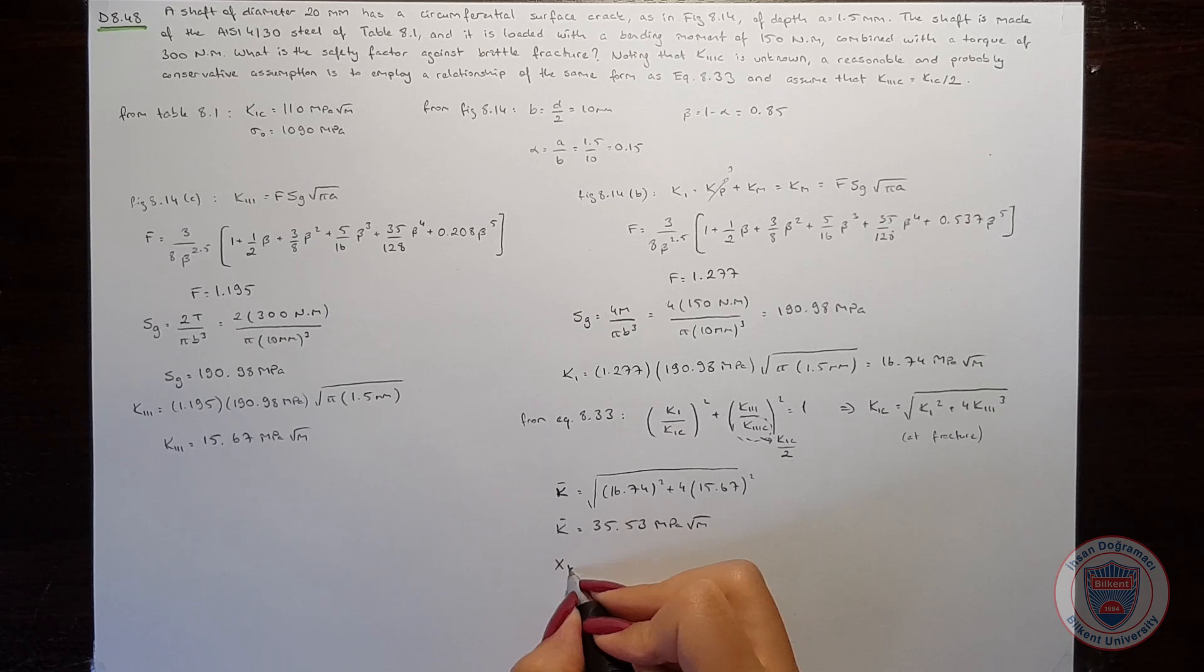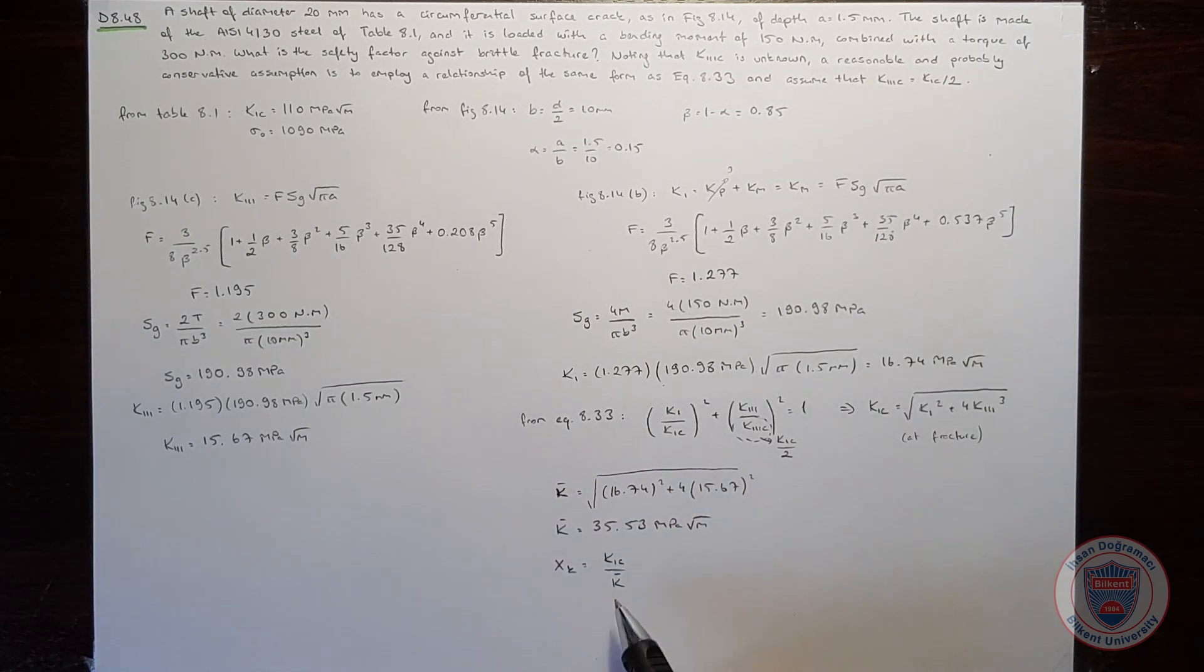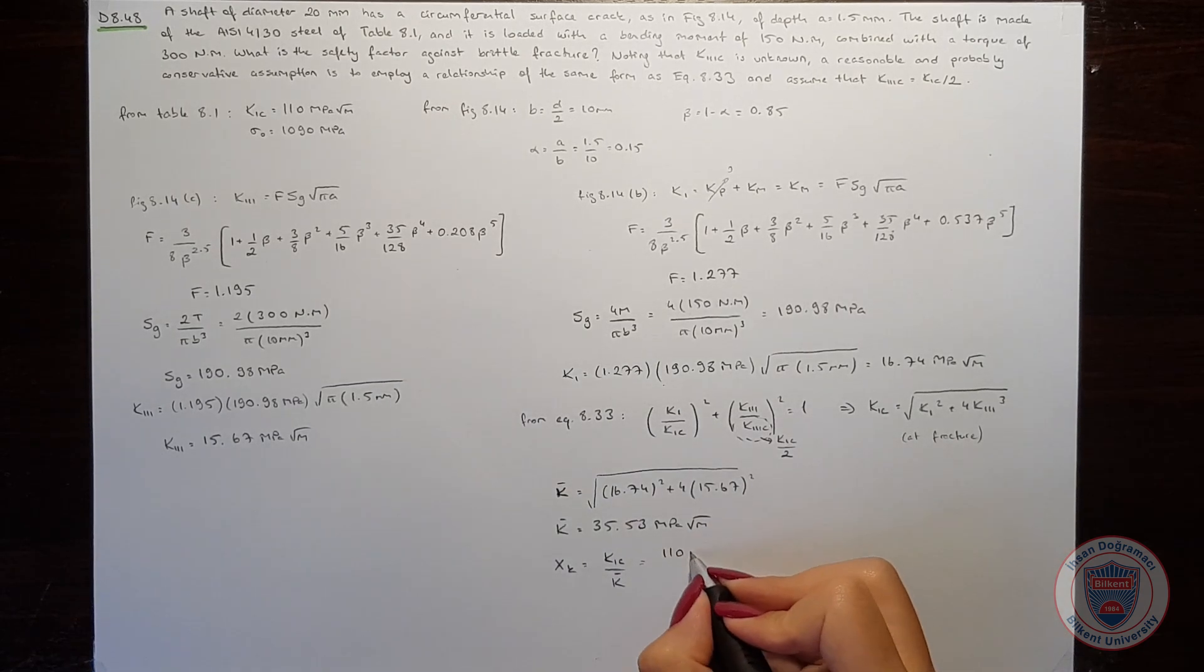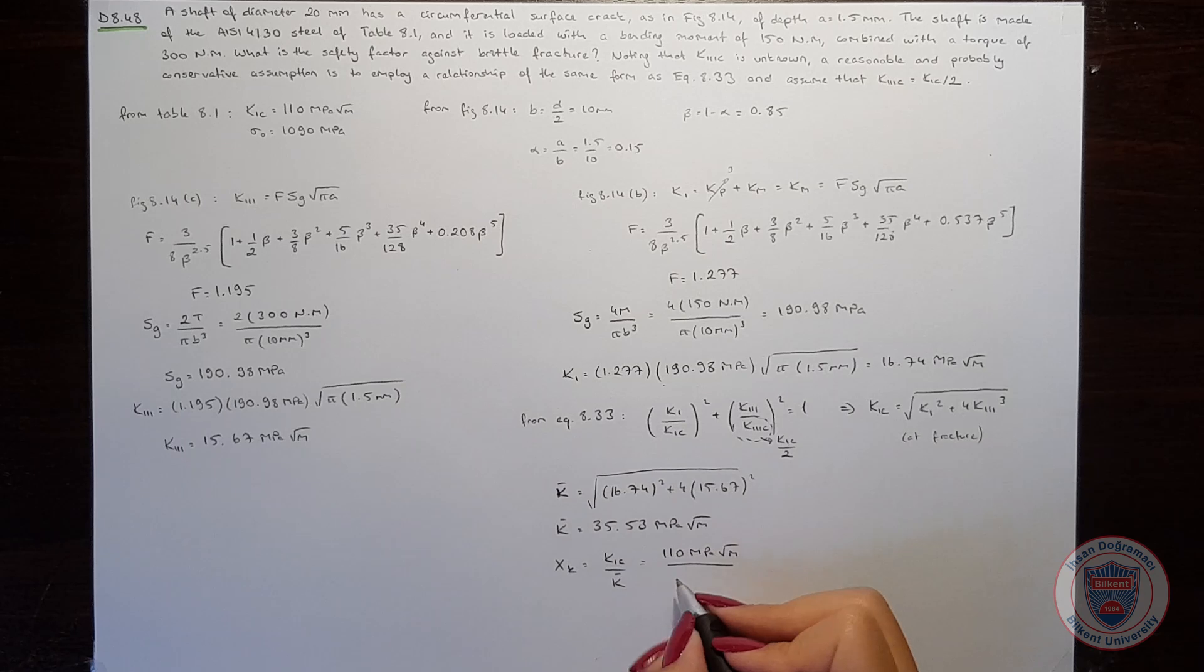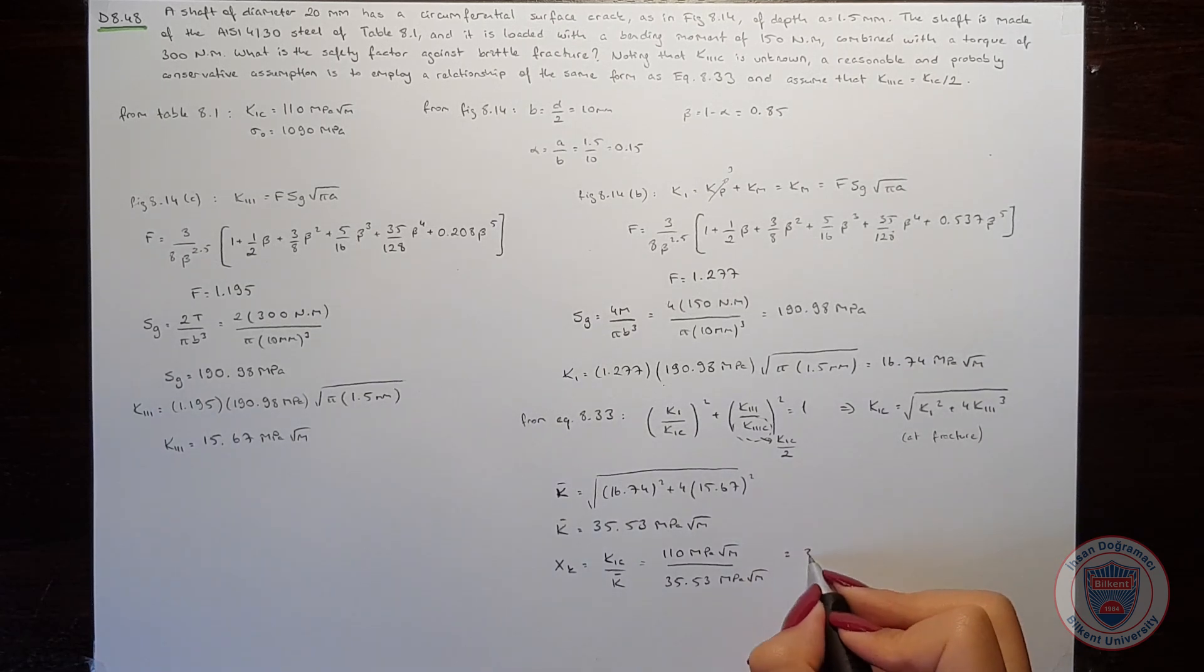Our safety factor against brittle fracture equals the critical stress intensity factor over K-bar: 110 MPa square root meters over 35.53 MPa square root meters, giving us a safety factor of 3.1.